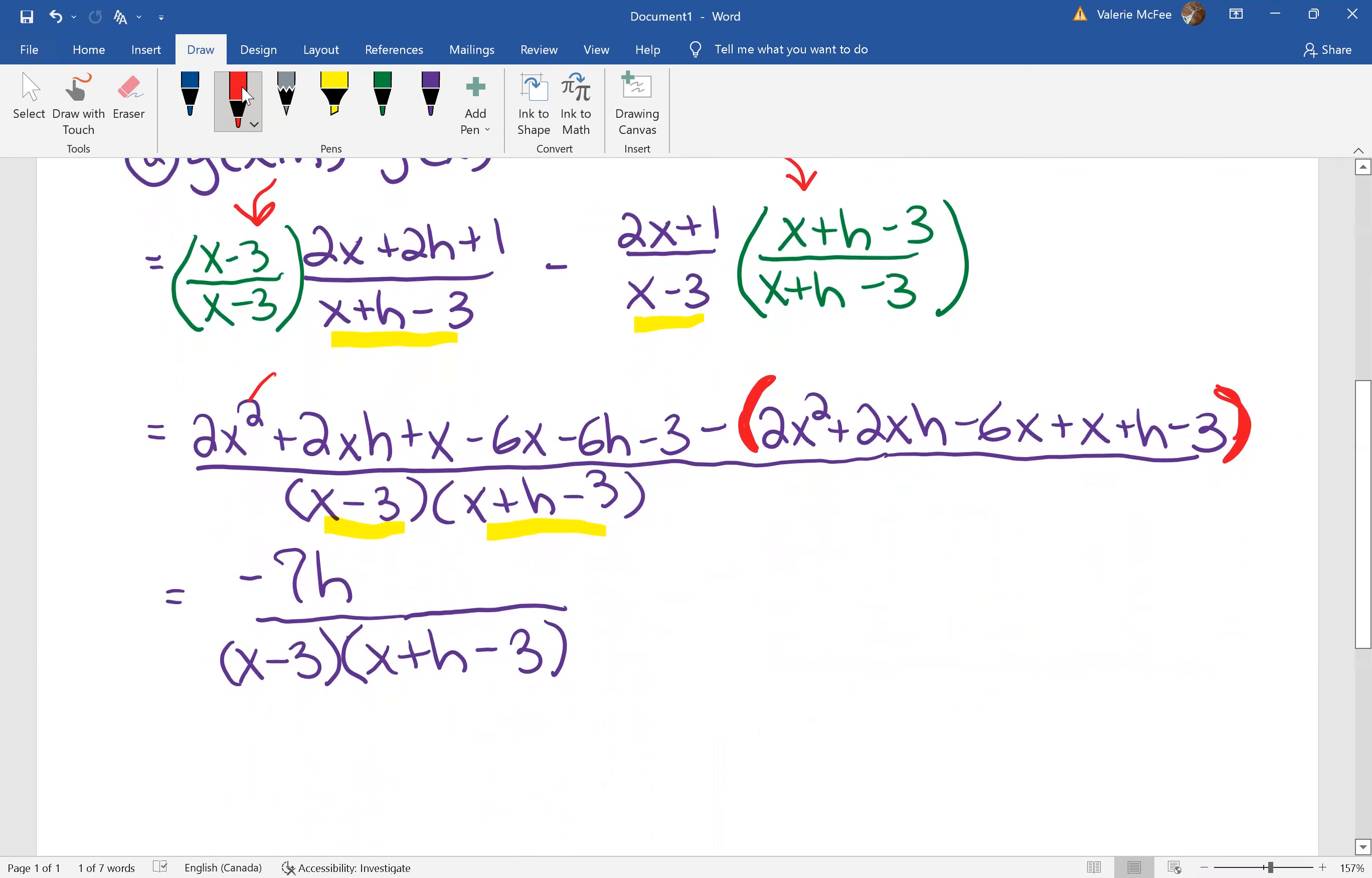And then we simplified. So, of course, we had 2x² minus 2x², 2xh minus 2xh, x minus x, negative 6x plus 6x, and negative 3 plus 3, leaving negative 7h in the numerator. That was our second step.